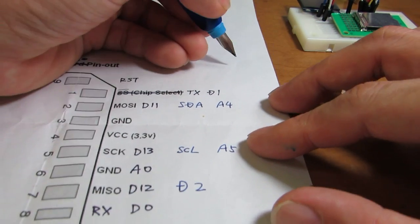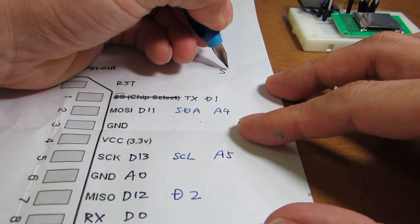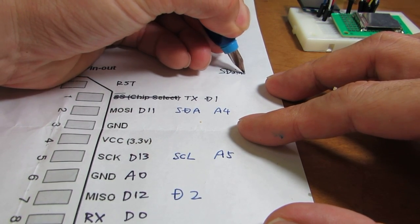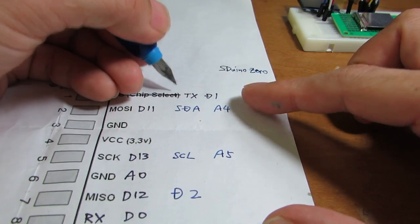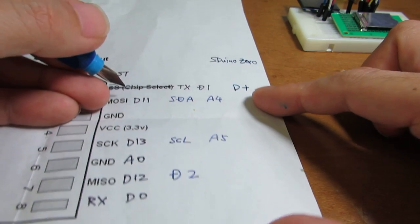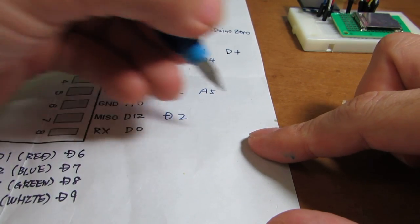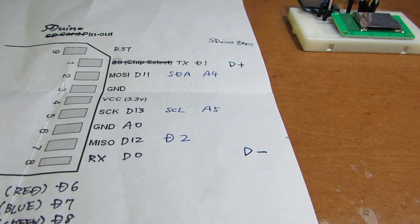So I need to add several new definitions. In the case of SD Arduino Zero, TX corresponds to D plus of USB and RX corresponds to D minus. Other definitions are the same as the original SD Arduino.